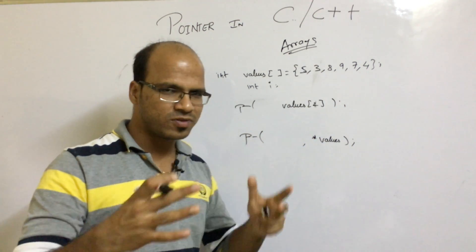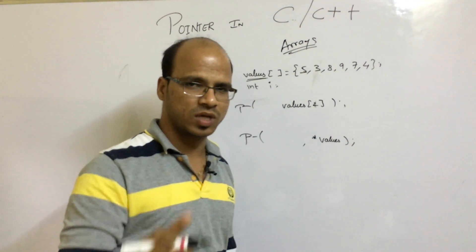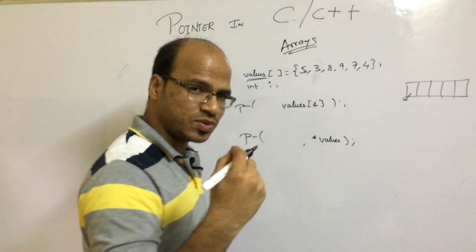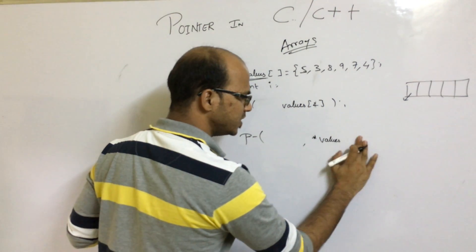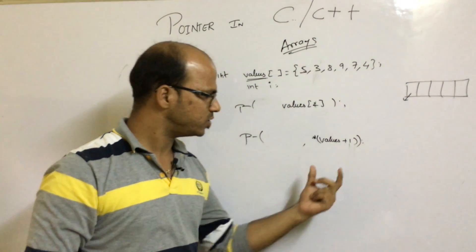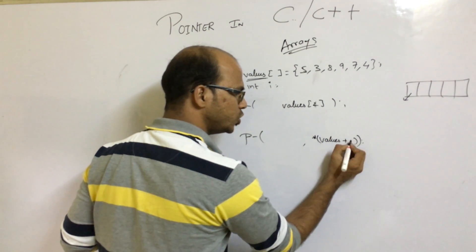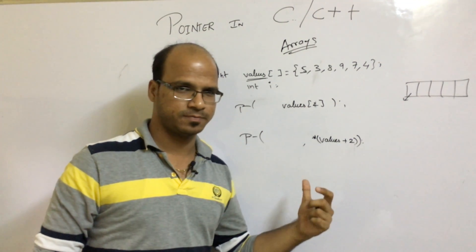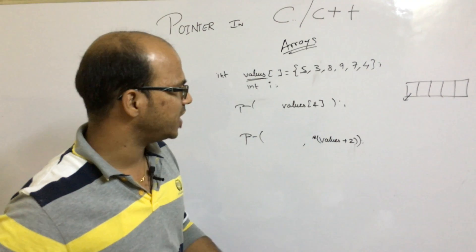How does this work? The array is stored in memory, and the variable 'values' refers to the first location. When you say star values it fetches the value at that first location. If I don't want the first location but the next one, I simply say star(values + 1) — that moves to the second location and gives you three. If I say plus two it gives the third element which is eight. That's how you fetch array values using pointers.